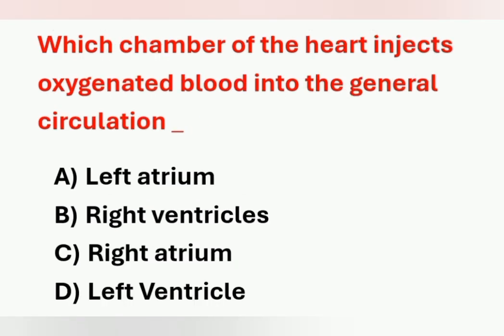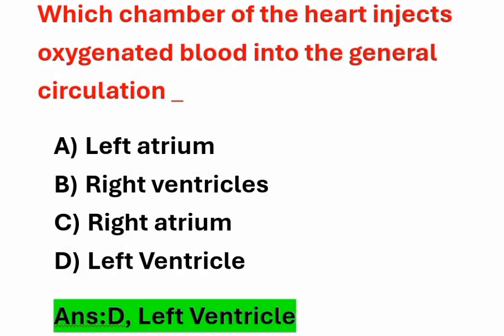Next question: which chamber of the heart ejects oxygenated blood into the general circulation? Options: A) Left atrium, B) Right ventricle, C) Right atrium, D) Left ventricle. Oxygenated blood goes into the general circulation through the left ventricle — through the aorta, blood is pumped to the whole body. Option D is the correct answer.